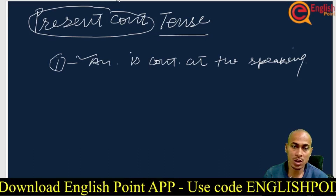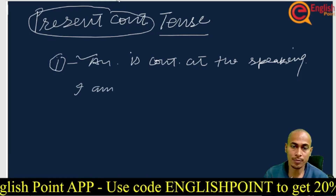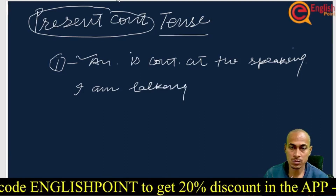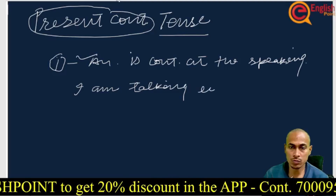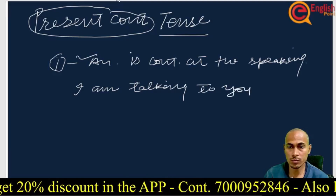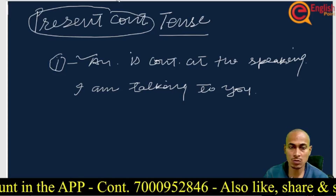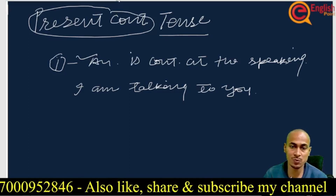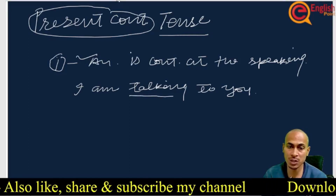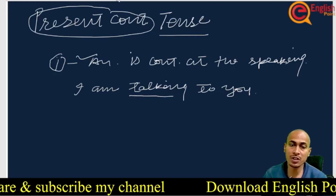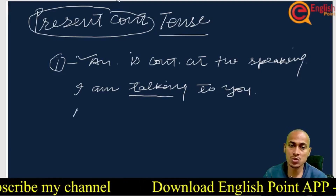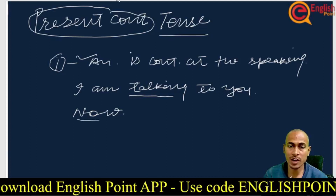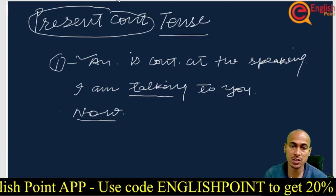For example, I am talking to you, and you are listening to me. Both actions are happening at the time of speaking — talking and listening are happening simultaneously. Actions are happening now. Right now I am writing a word, so it is present continuous tense.